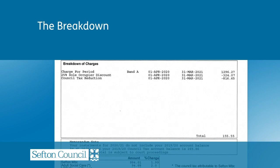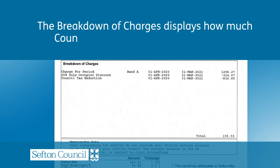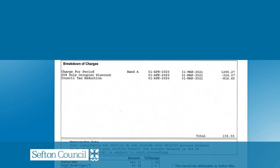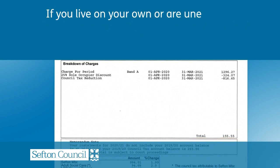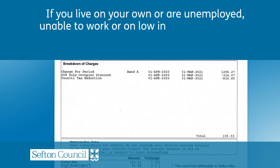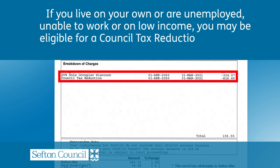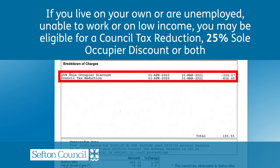The breakdown of charges displays how much council tax you'll be expected to pay. If you live on your own, are unemployed, unable to work, or on a low income, you may be eligible for a council tax reduction, a 25% sole occupier discount, or both.